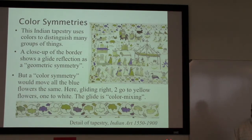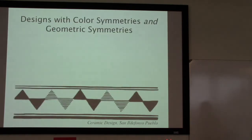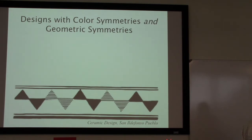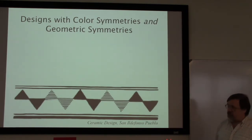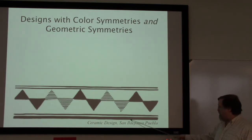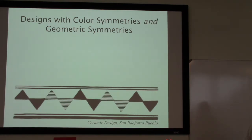Instead, some of the blues are going to whites and some of them are going to yellow — that's the sort of thing we're trying to avoid. Now sometimes we get design patterns that have both true color symmetries and other things that are only symmetries of the geometry. This is a design from San Ildefonso Pueblo and we'll take a look at the symmetries in it.